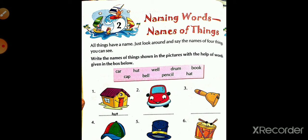Things that have a name are called naming words. Now students, look here — write the name of the thing shown in the pictures with the help of words given in the book below. Students, here are the words in pink color which are the names of things: car, cape, heart, bell, well, pencil, drum, hat, book.